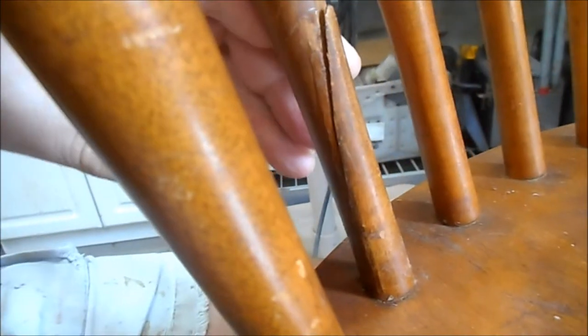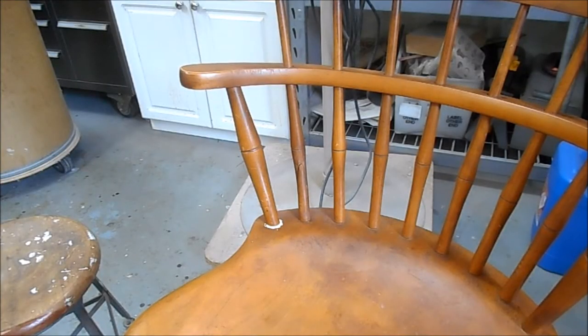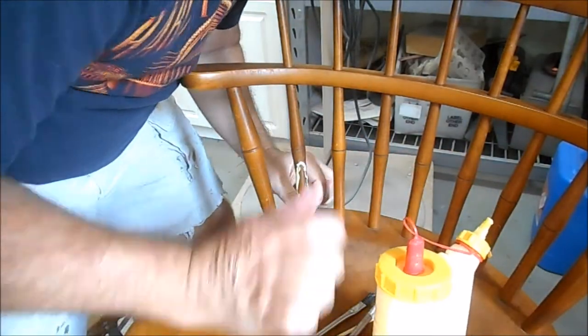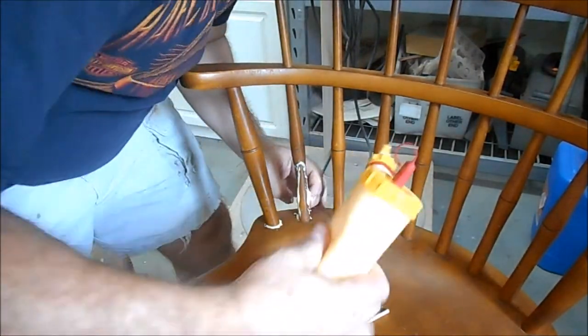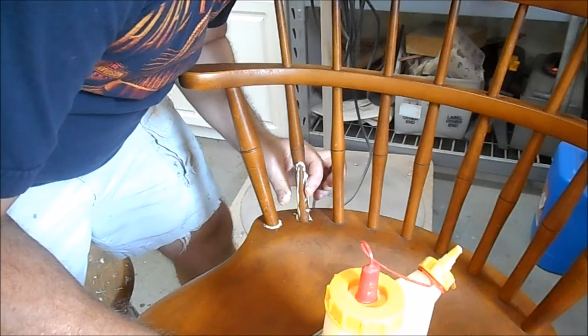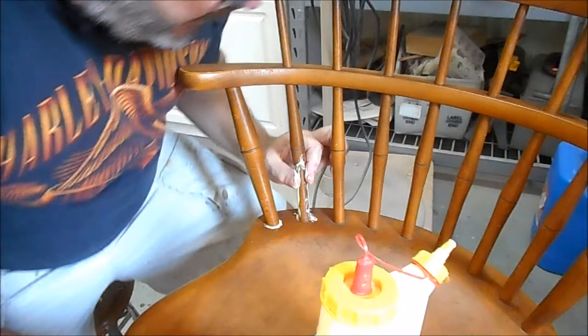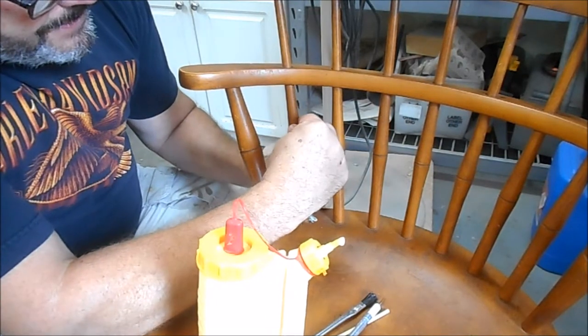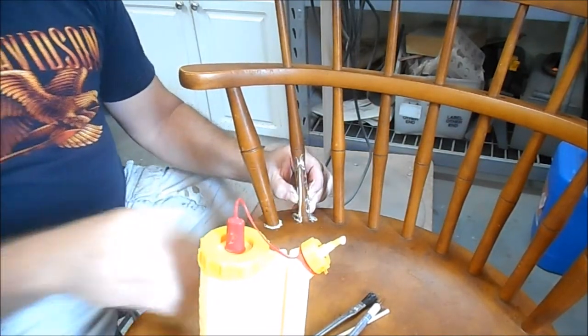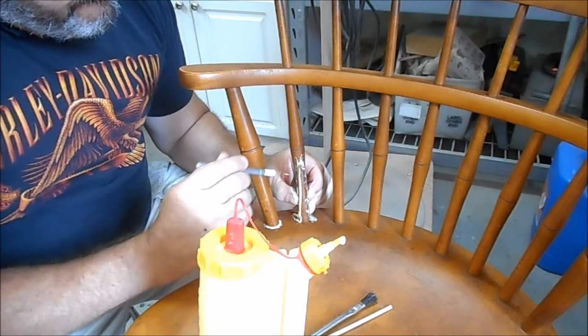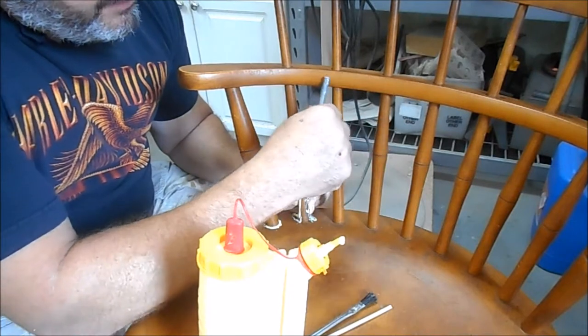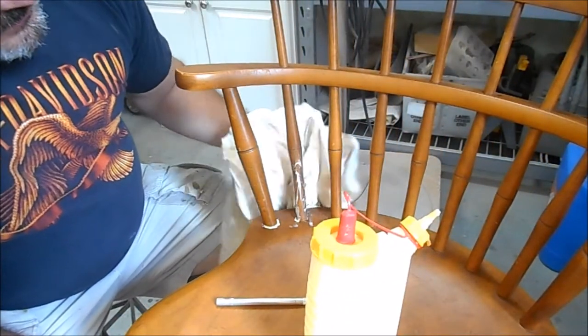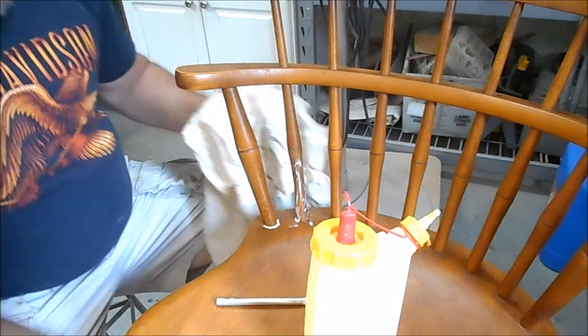Let's get some glue on that shattered joint. As we've done before we're just working that glue as hard as we can into those cracks. We're going to get it on every surface we can. This is going to be one of those glue ups where as the clamps go on all sorts of glue squeezes out.